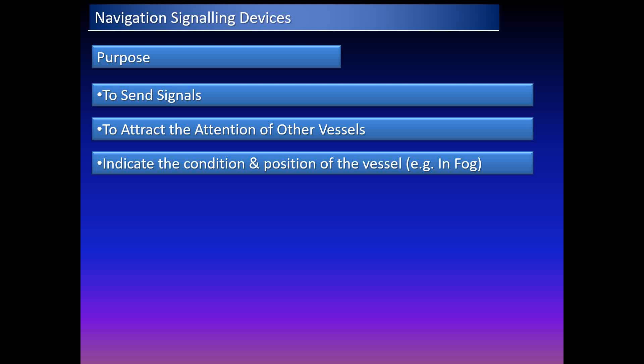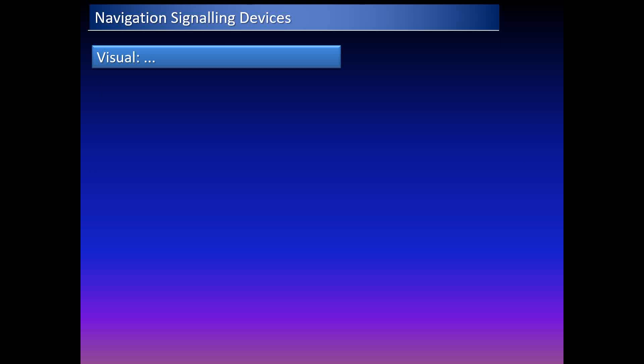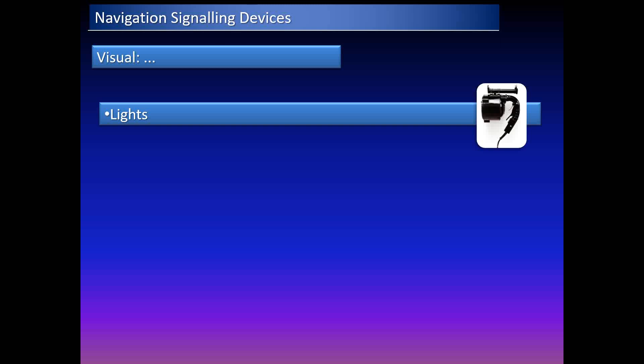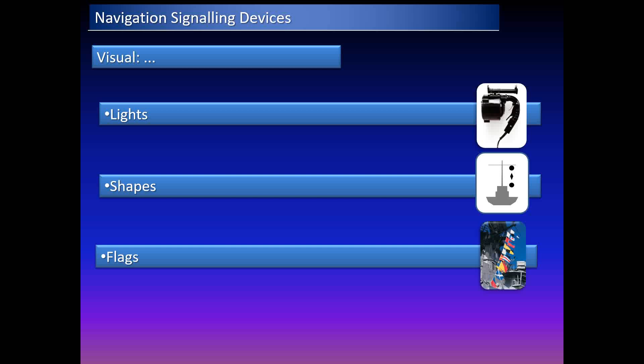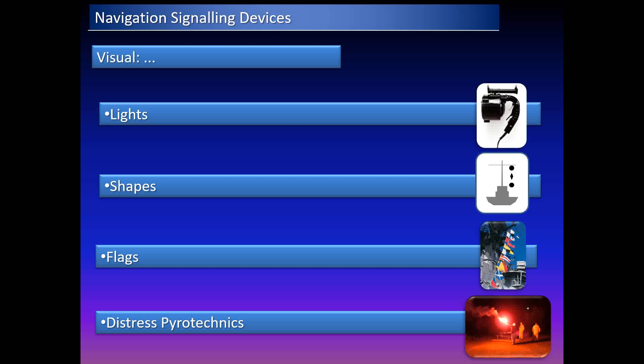Visual signaling devices used to send signals or attract the attention of other vessels include: lights (such as the Morse signaling or Aldis lamp), shapes, flags, and distress pyrotechnics in a real emergency.